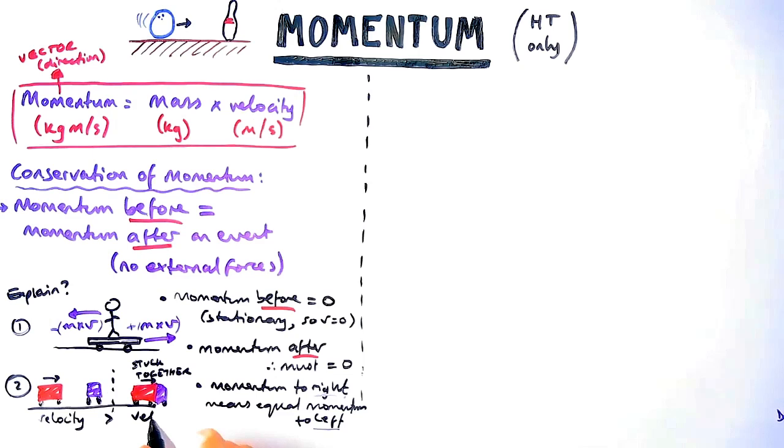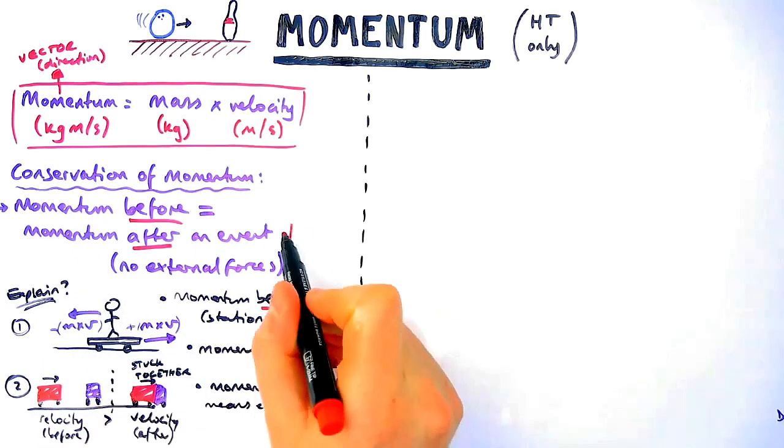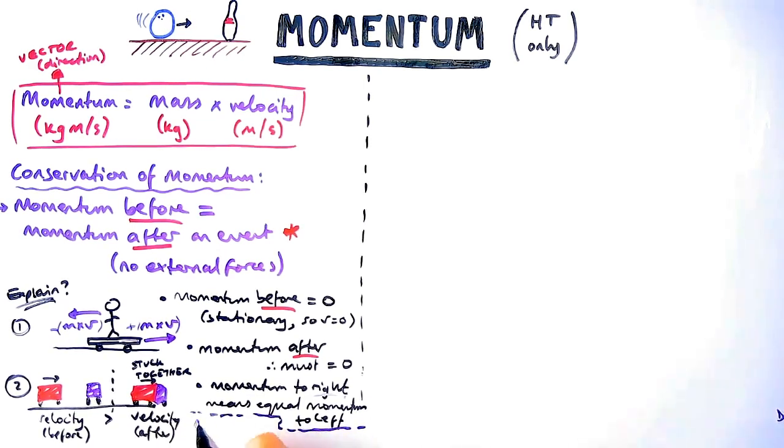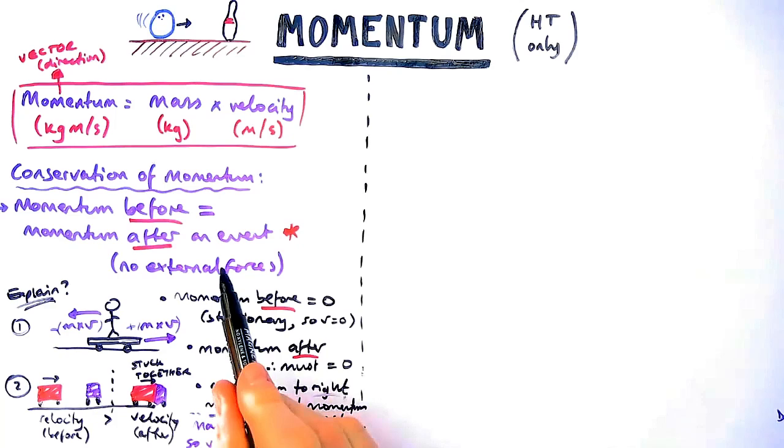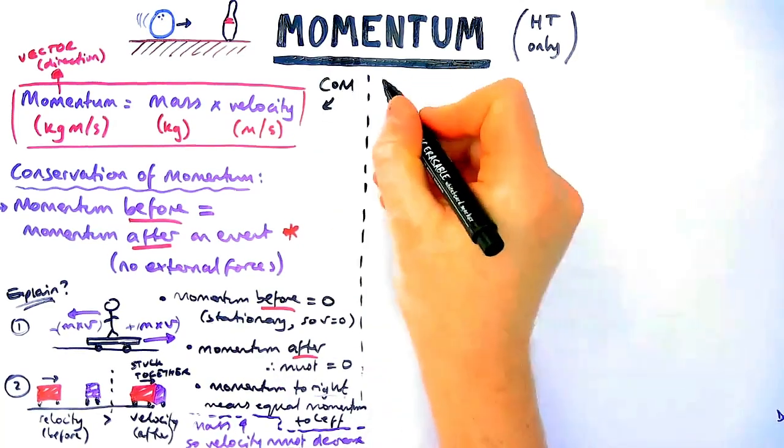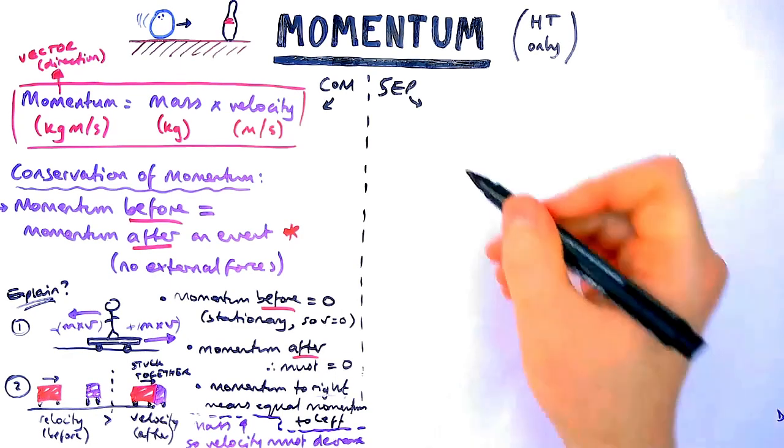In a question like this they'd ask you something like explain why the velocity of the red truck before is higher than the velocity afterwards, i.e. why does it slow down. So what you'd say is about the conservation of momentum, and then you'd say well I know that afterwards the mass of the two trucks stuck together is higher, so for the same momentum the velocity must go down just like how that equation works, one thing goes up the other thing goes down. That's everything for combined science, so you can stop this video now if you're a combined science student.